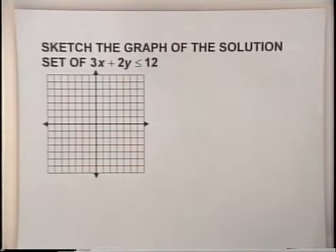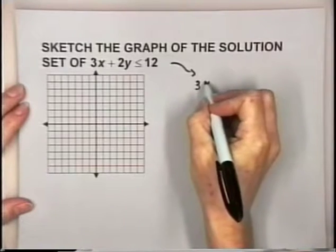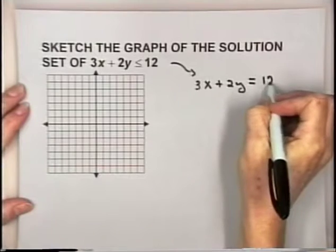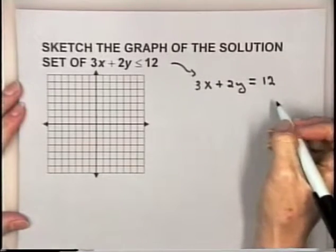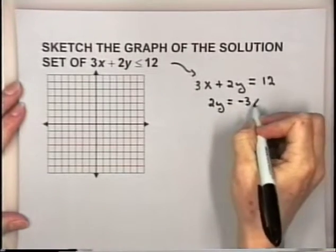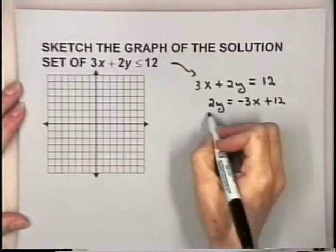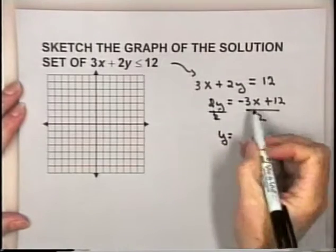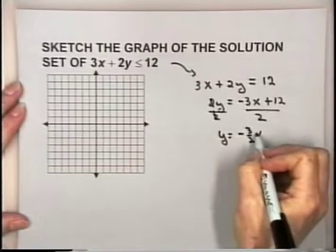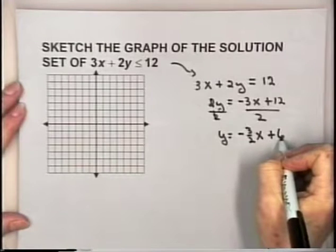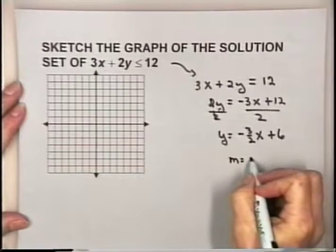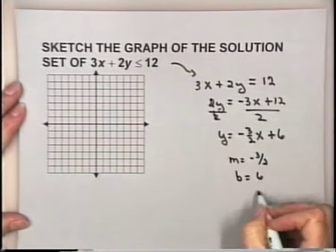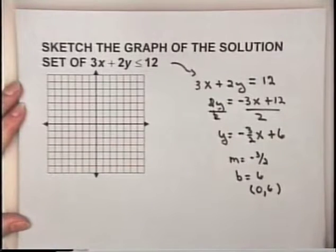Sketch the graph of the solution set of 3x plus 2y is less than or equal to 12. Let's write the corresponding equation: 3x plus 2y equals 12. Solving for y: 2y equals negative 3x plus 12, so dividing both sides by 2 gives y equals negative 3 halves x plus 6. The slope of this line is negative 3 halves and the y-intercept is 6, meaning when x is 0, y is 6.